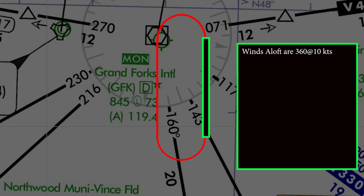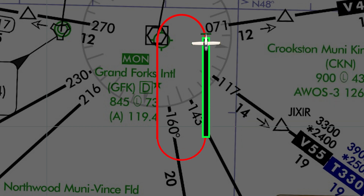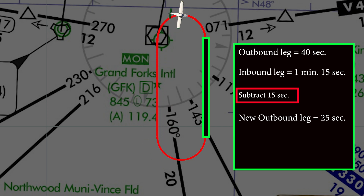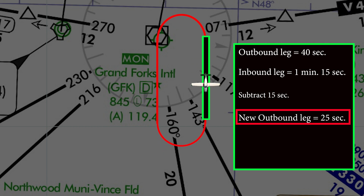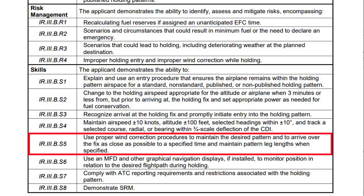For example, if the winds aloft are forecasted to be 360 at 10 knots, which is a direct tailwind on the outbound leg, we will subtract 20 seconds, making your first outbound leg 40 seconds before commencing your standard rate turn inbound. Once you are in the airplane and actually flying the hold, you can use the following simple rule of thumb to make appropriate timing corrections, as the wind conditions may be slightly different than what you got in your weather briefing. I teach my students to make a one-for-one swap. For example, if your first inbound leg after the 40-second outbound leg was 1 minute and 15 seconds, subtract 15 seconds off of your next outbound leg, now making it 25 seconds. The FAA does not provide specific guidance on how to make timing corrections, so your flight instructor may have another way to make appropriate timing corrections.